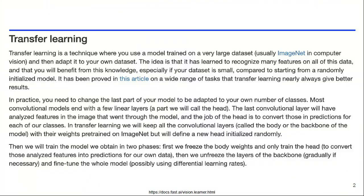I'll start with a definition. Just quoting from the FastAI website, transfer learning is a technique where you use a model trained on a very large dataset, usually ImageNet for computer vision, and then adapt it to your own dataset. The idea is that it has learned to recognize many features on all of this data, and that you'll benefit from this knowledge, especially if your dataset is small compared to starting from a randomly initialized model. Research has proven that on a wide range of tasks, transfer learning nearly always gives better results, and it's very useful for satellite imagery tasks, especially where you don't have a massive amount of labeled data.